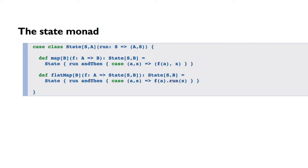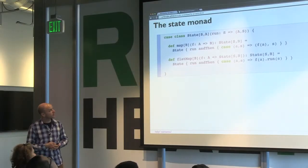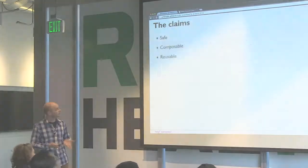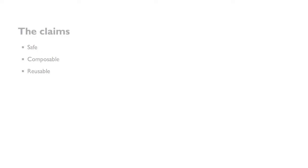Now that we've built our State case class and written map and flatMap, we basically have what's called the State monad. It looks like this — unchanged from the previous slides. What can we do with this thing? Let's come back to the claims I made at the beginning: that functional programming is safe, composable, and reusable. Let's look at how State gets us that.